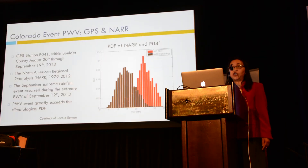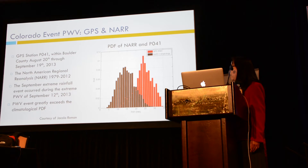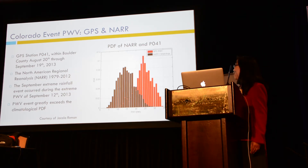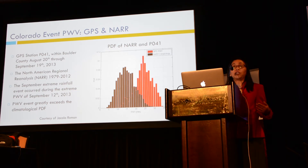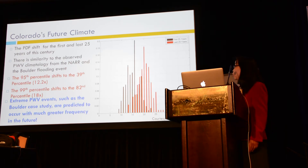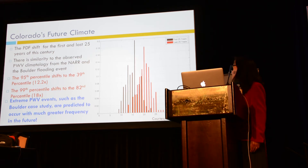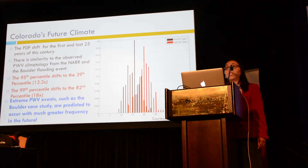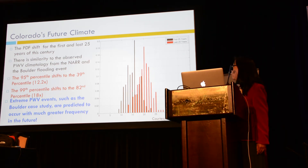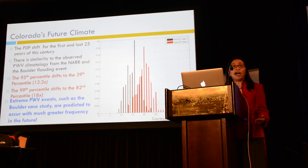For future climate change, a colleague did a study comparing the climatology of PW in the Boulder area with the flood event, showing much wetter conditions during the flood. She extended this to a climate simulation over 100 years — the black line represents the first 20 years (approximately 2000–2025) and the last 25 years (2075–2100). What she concluded is that because of the PDF shift, it implies that in the future we might get more flooding events.